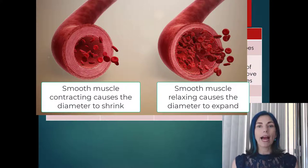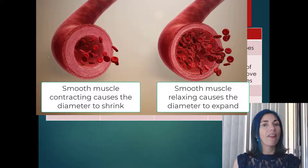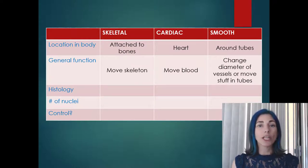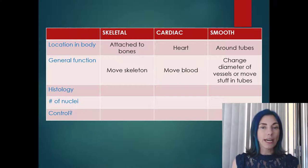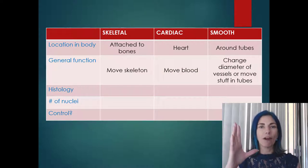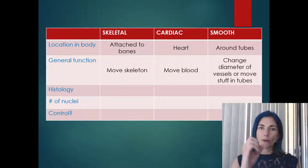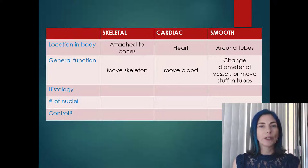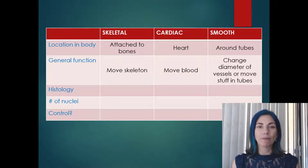When smooth muscle around a blood vessel relaxes, you increase the diameter of that blood vessel — we'll learn more about that in cardiovascular physiology. When smooth muscle lines something like the digestive system, you get rapid successions of contractions and relaxations responsible for peristalsis, which is the movement of food through the digestive system. So smooth muscle has a broader functional description than the other types.